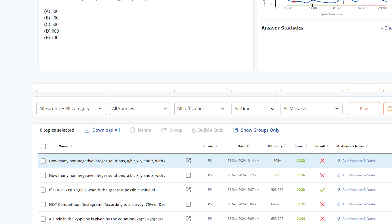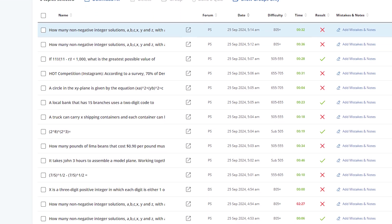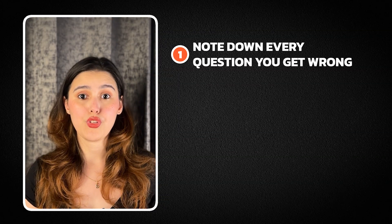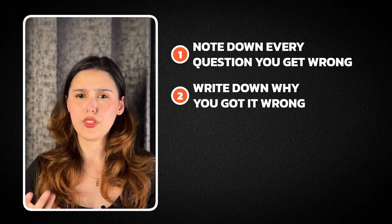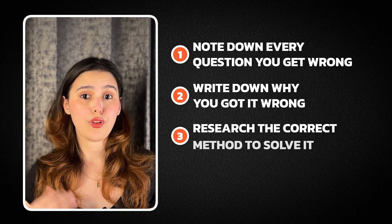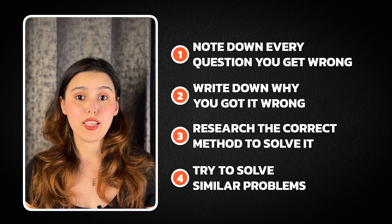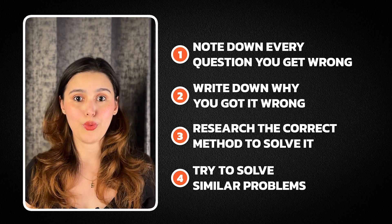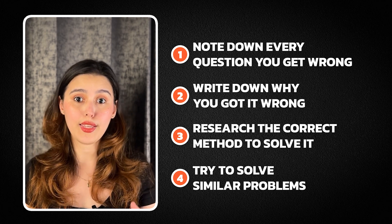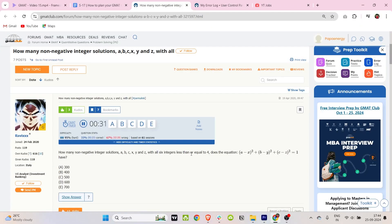Step 4: Identify your weaknesses. Look at your practice test results — which question types made you feel uneasy? Was it the tricky data sufficiency questions or multi-source reasoning problems? Here is where the error log comes in handy. Make sure you're updating it regularly and reviewing it every once in a while. Note down every question you get wrong or struggle with, write down why you got it wrong — was it misinterpreted or a time management issue? — then research the correct method and try to solve similar problems. This habit of tracking mistakes separates the cream layer. If you don't like entering mistakes manually, you can use GMAT Club's automatic error log, which works together with a timer and records any question you attempt on GMAT Club for free.